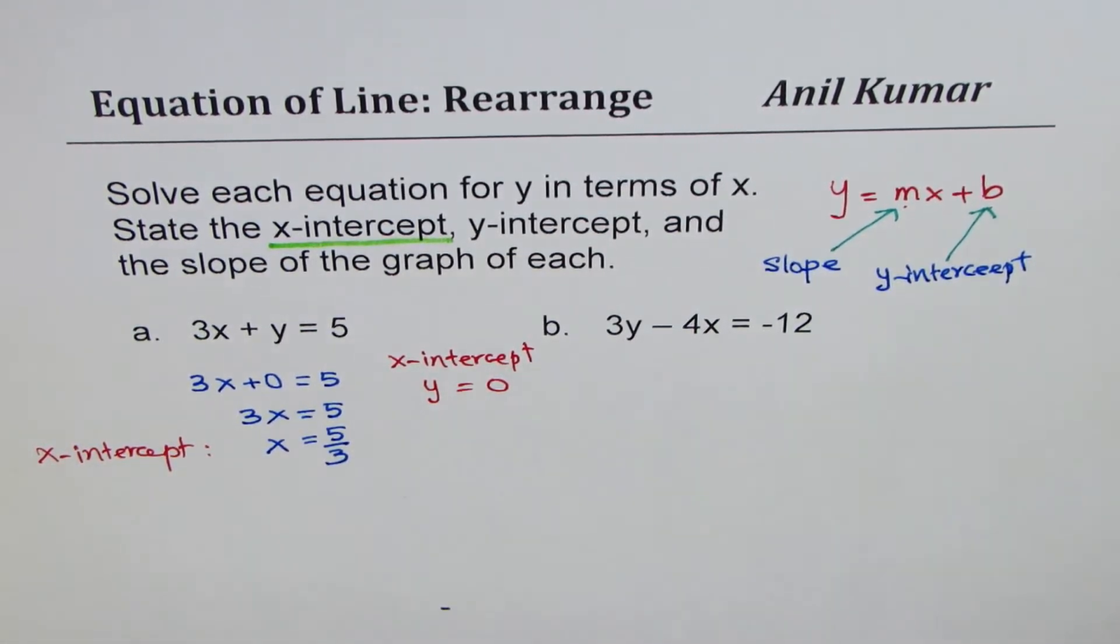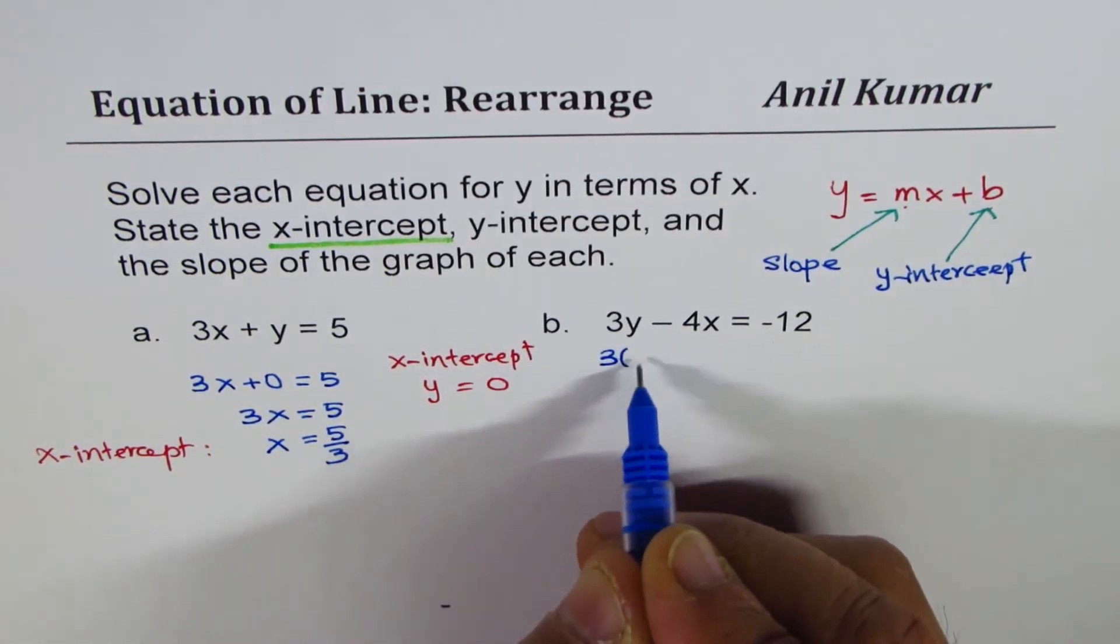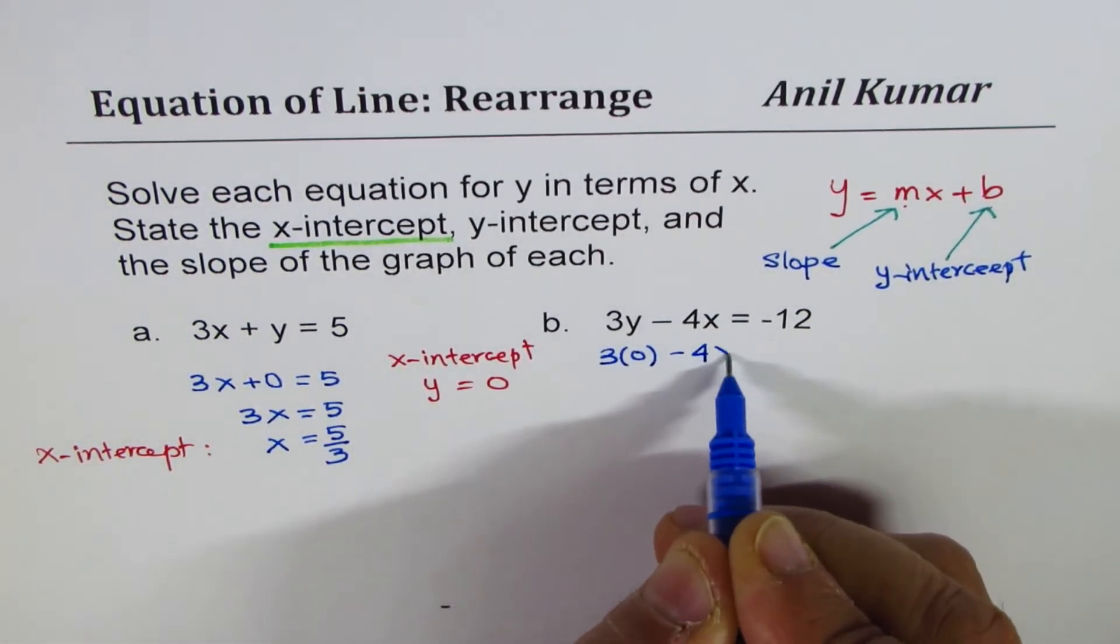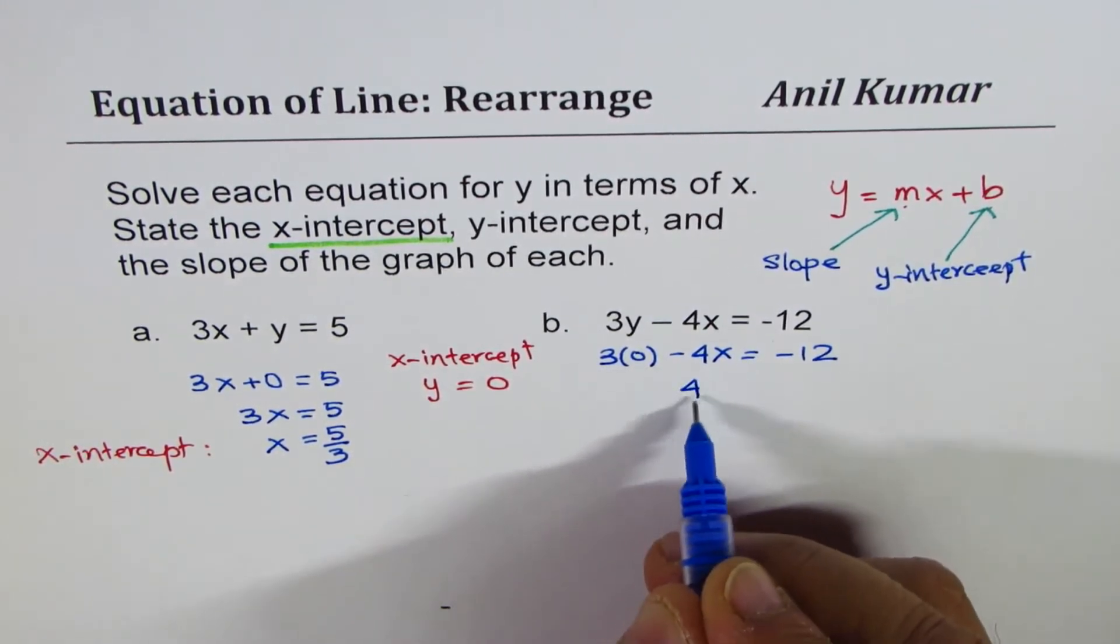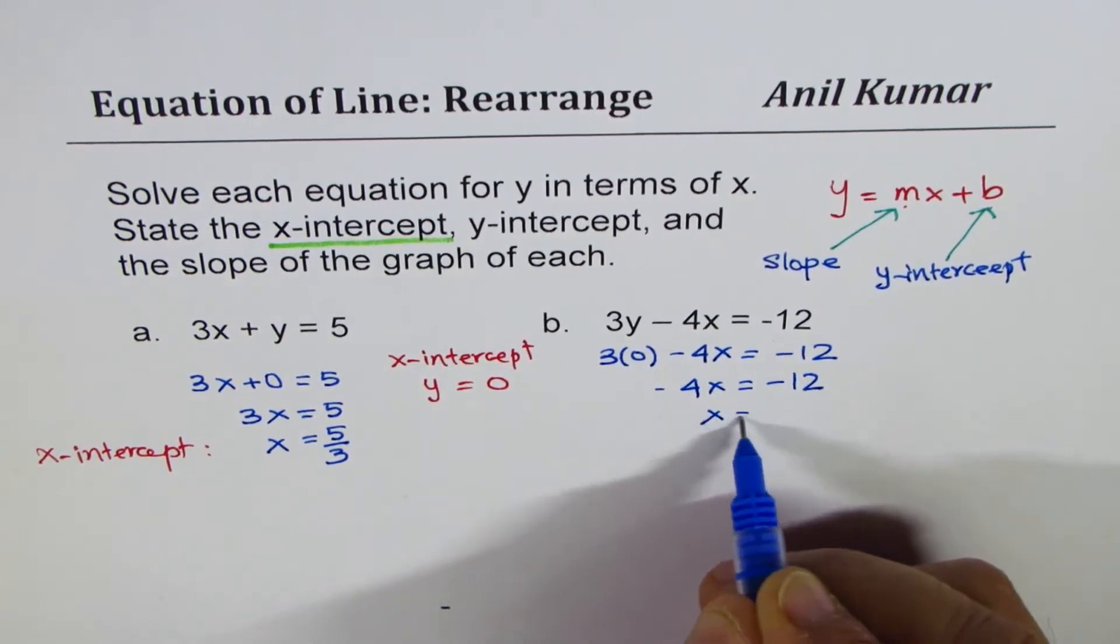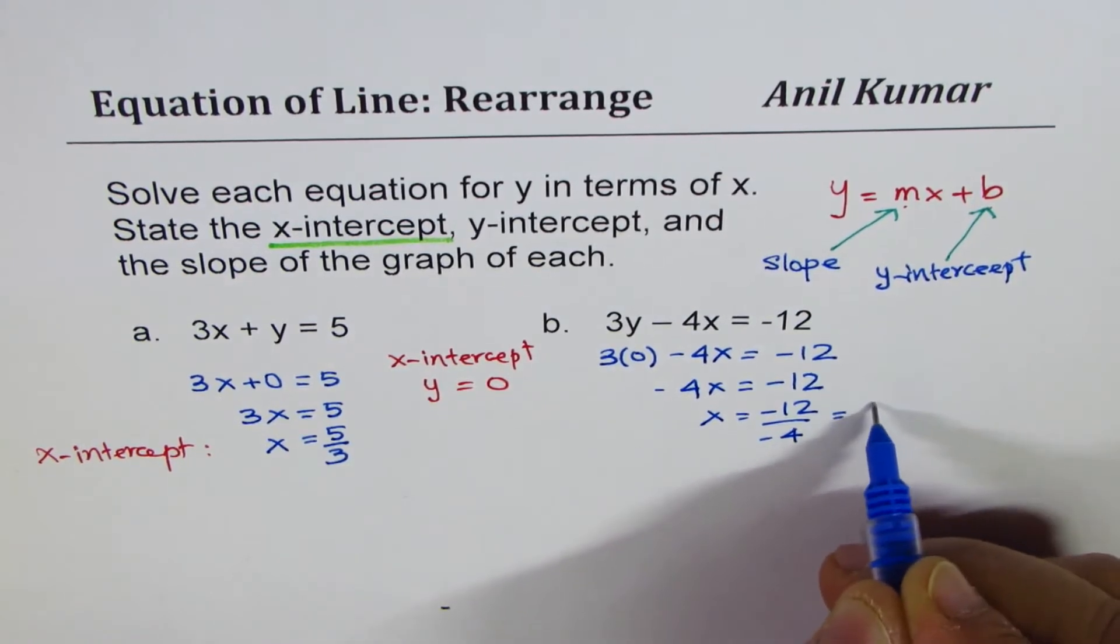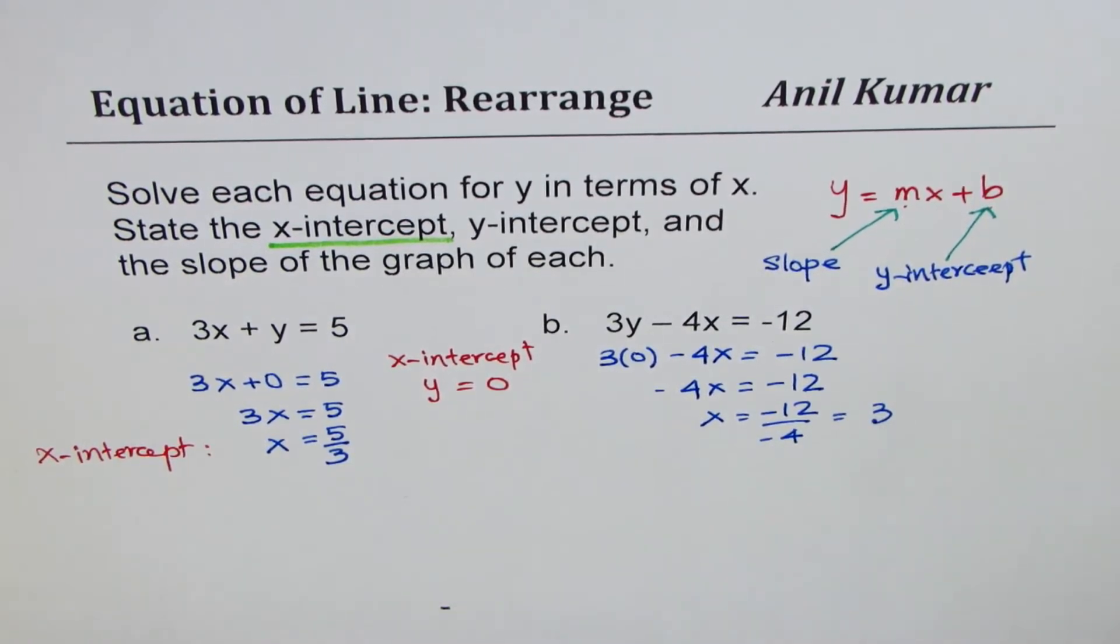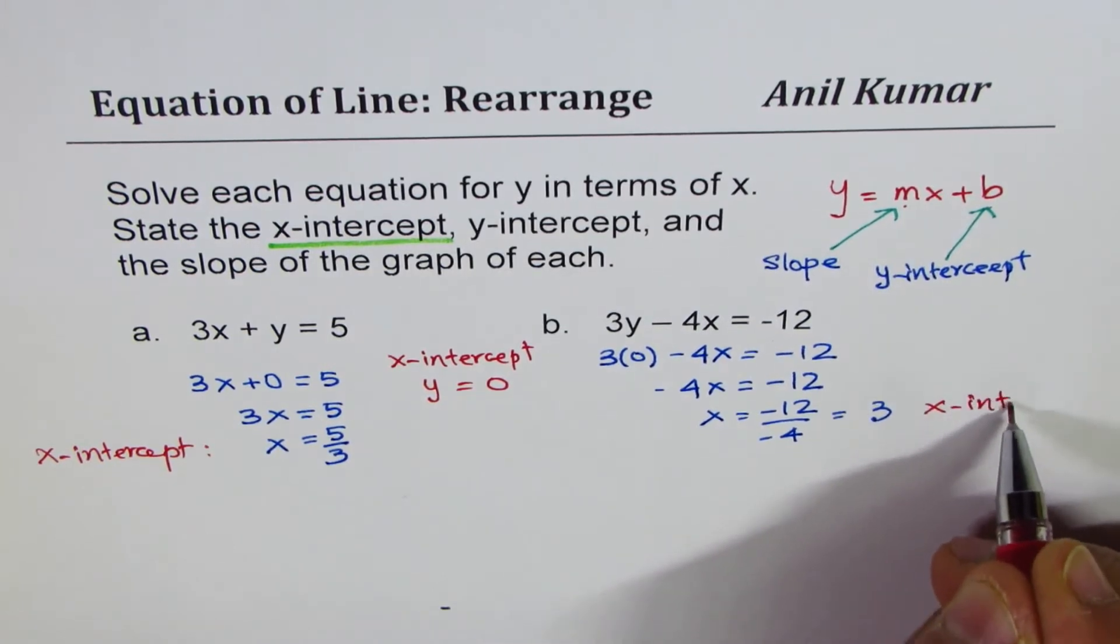Let us do the same for the second equation also. We will substitute 0 for y. 3 times 0 minus 4x equals to minus 12. So we get minus 4x equals to minus 12. x equals to minus 12 divided by minus 4, and this is plus 3. So we have got x-intercept for the second equation also.